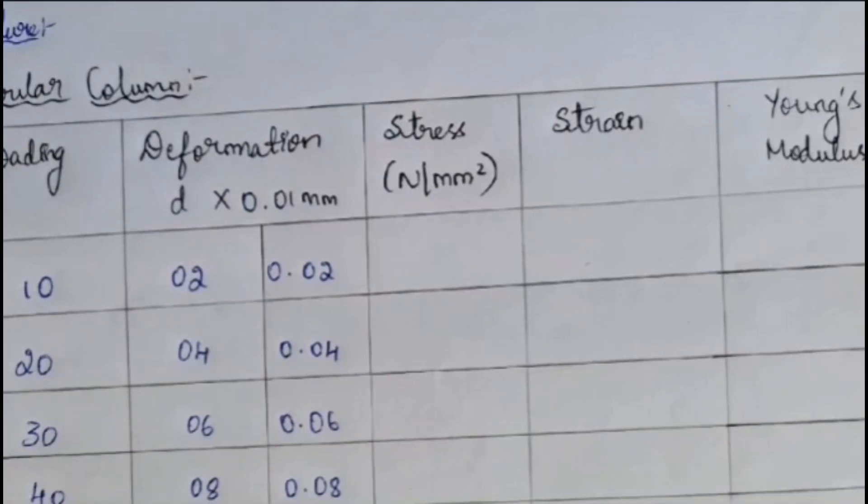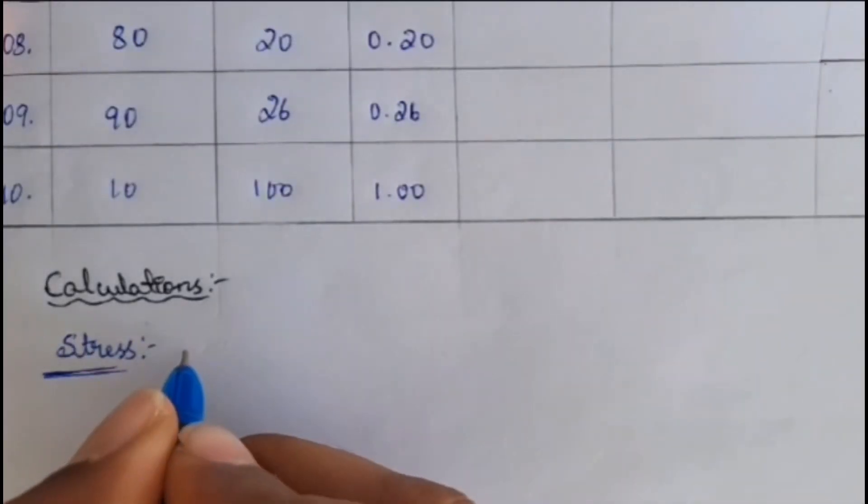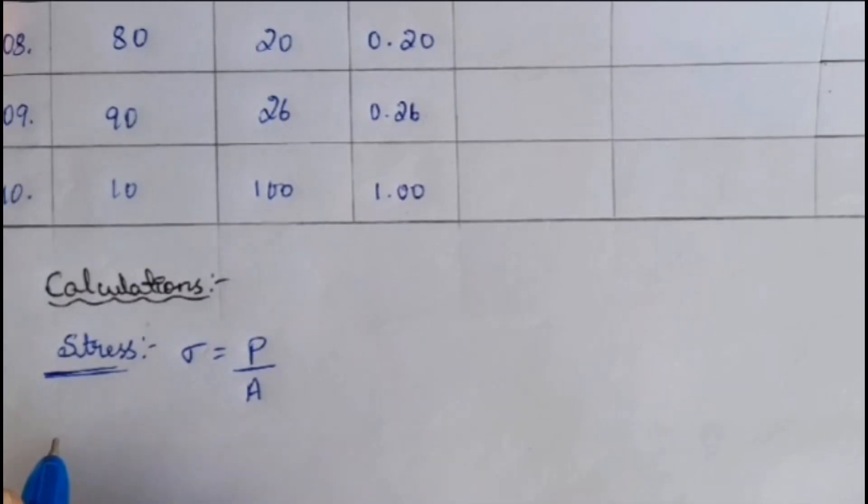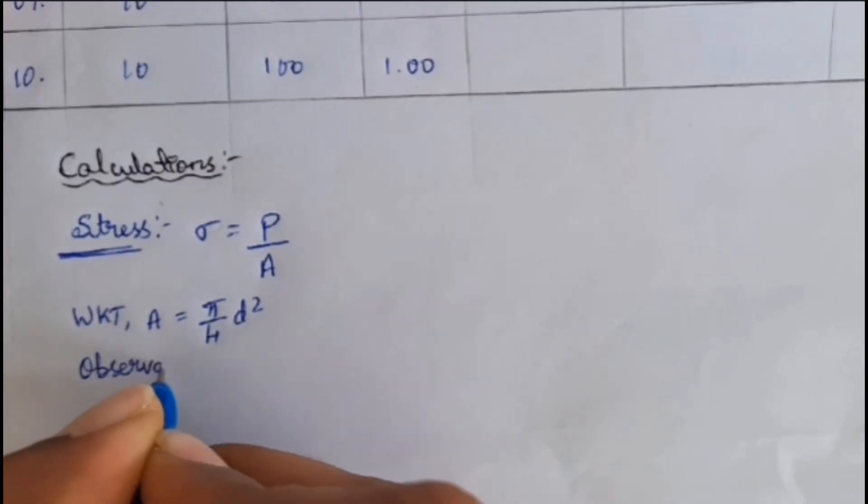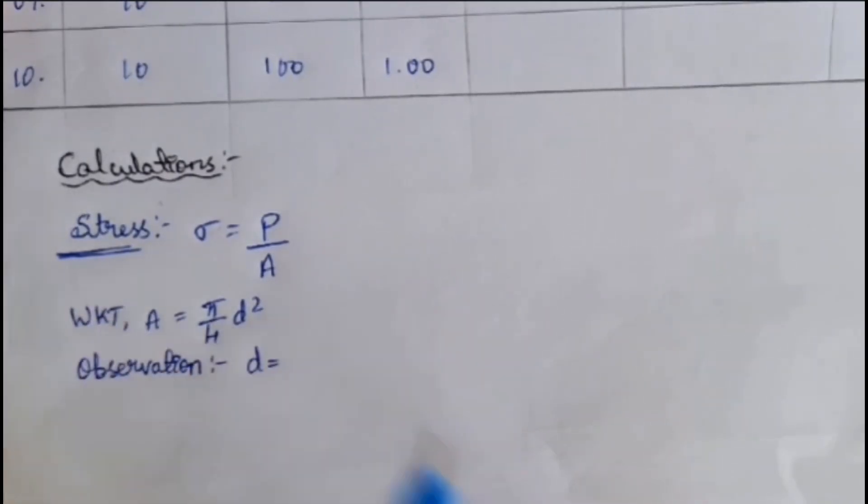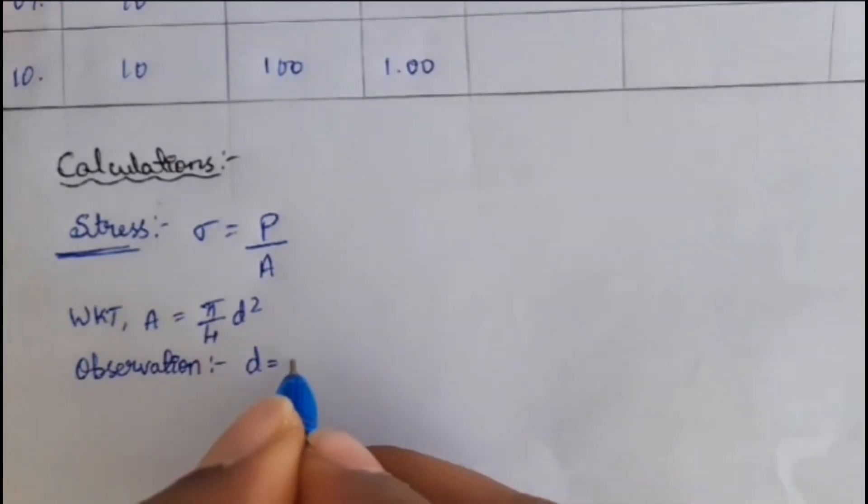Next, I will be showing how to calculate the stress. Stress, that is, sigma is equal to P by A. P means load. That is, load acting. We also know that area is equal to pi by 4 d square. From the observation, we will know that the diameter, original diameter D is equal to 14 mm. That is shown there. That is, 14 mm. So, next, we have to calculate the area value.